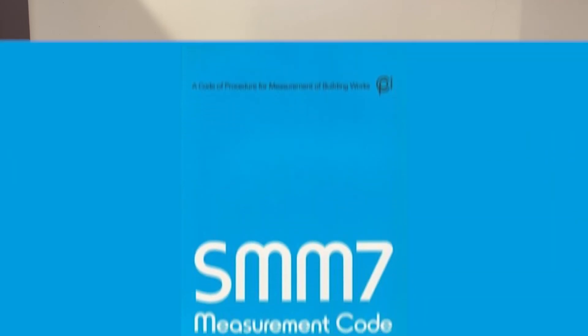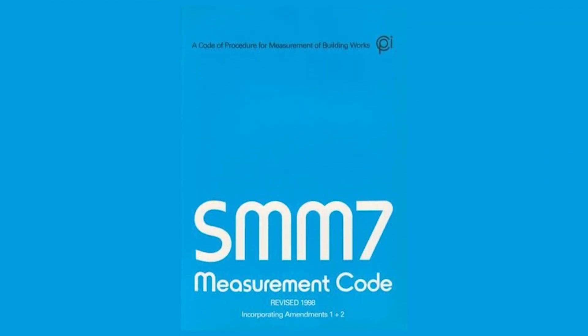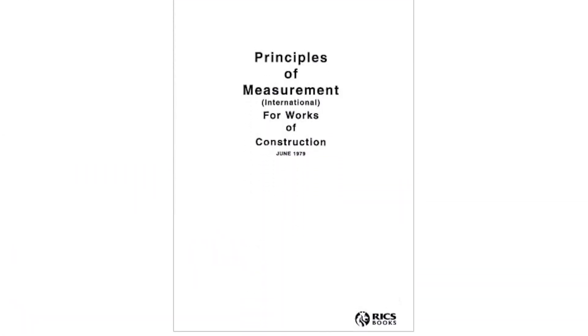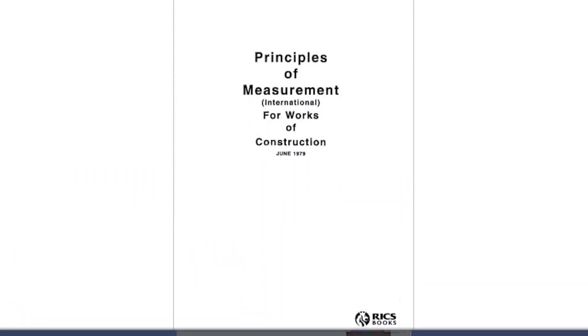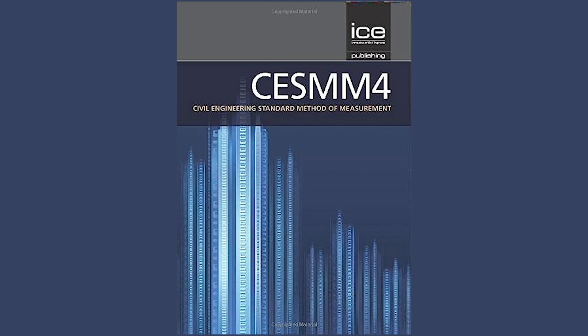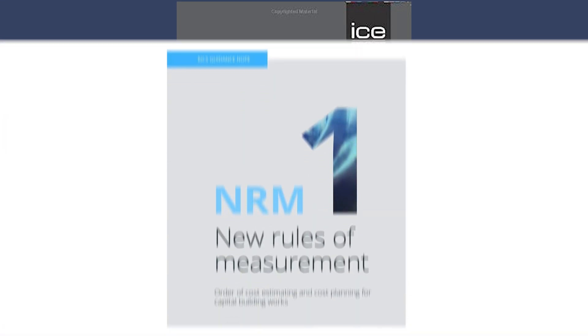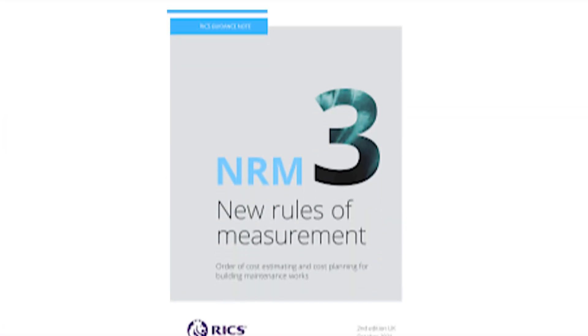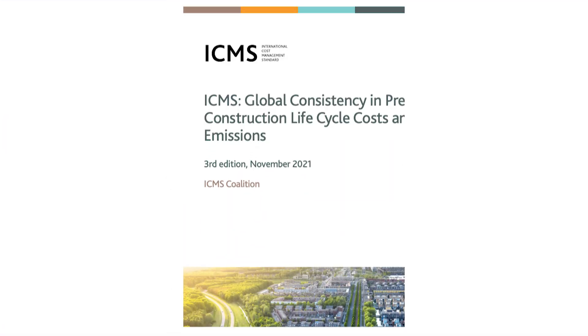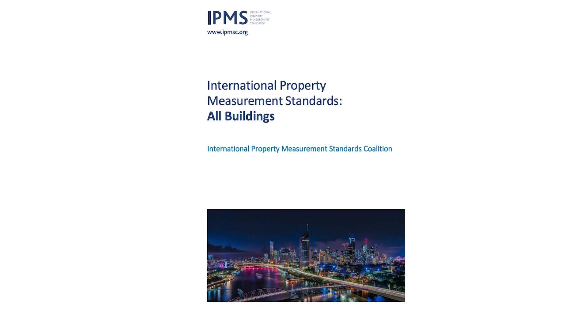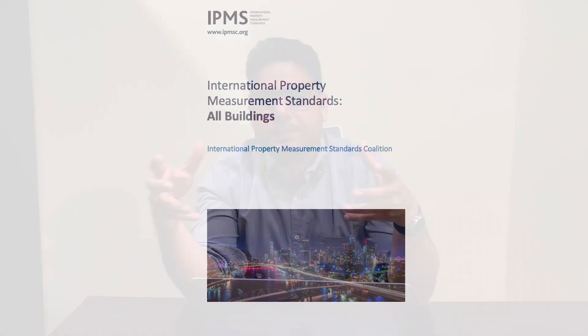There are many methods of measurement. Standard Method of Measurement (SMM) is one, though it is not used anymore — it has been replaced by NRM2. Then there is Principles of Measurement International (POMI), SISM, NRM1, NRM3, ICMS, and IPMS. These are all methods of measurement.